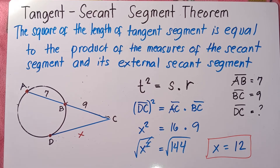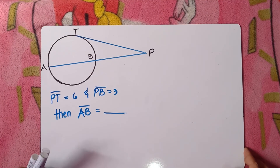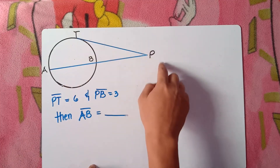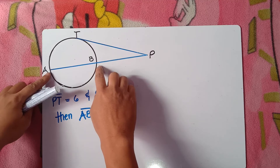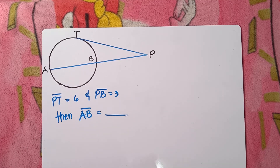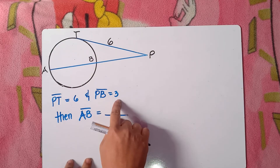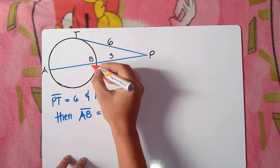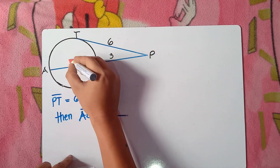Let's try another example. We have a circle with a secant and a tangent. Line TP is the tangent, and line AP is the secant since two points intersect the circle. PT equals 6 — the tangent is 6. PB equals 3, and you are told to find AB, which we set as X.